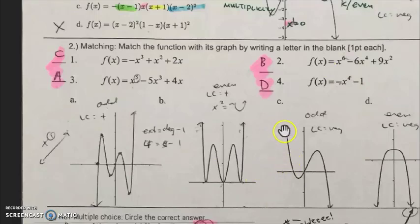Graph C, I have starting up, ending down. That is an odd leading coefficient negative. That would be choice equation number one, so one, C.